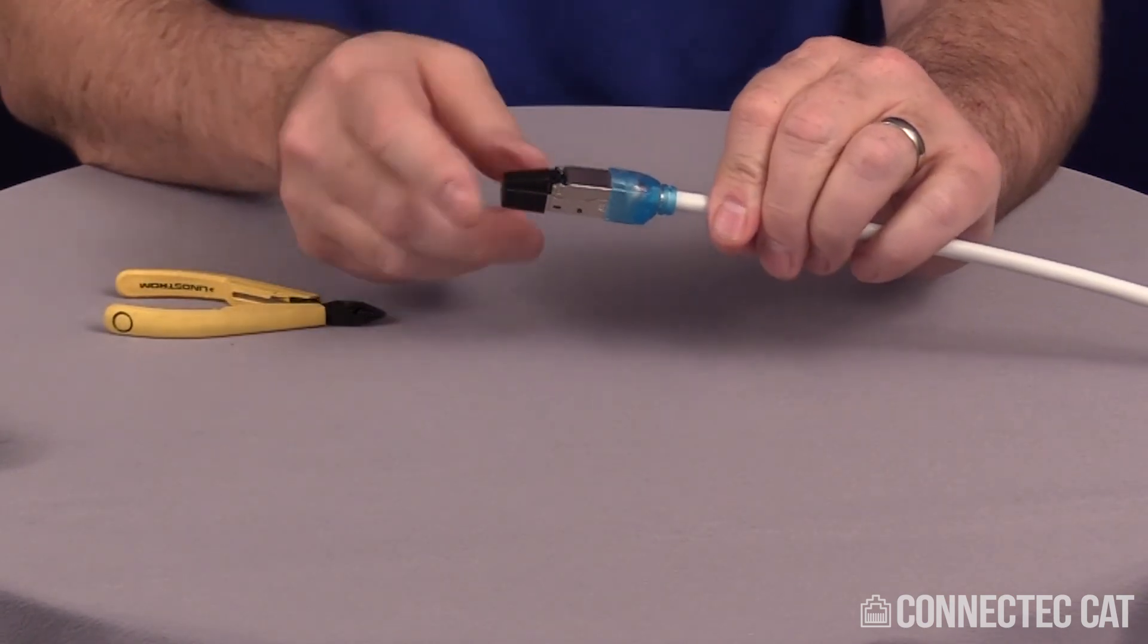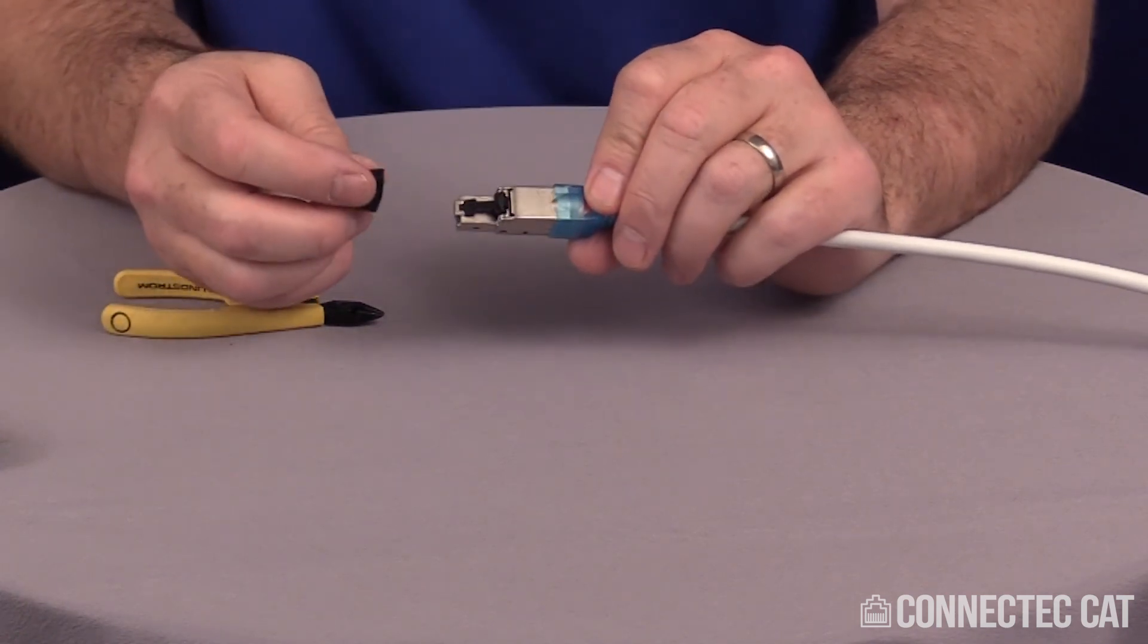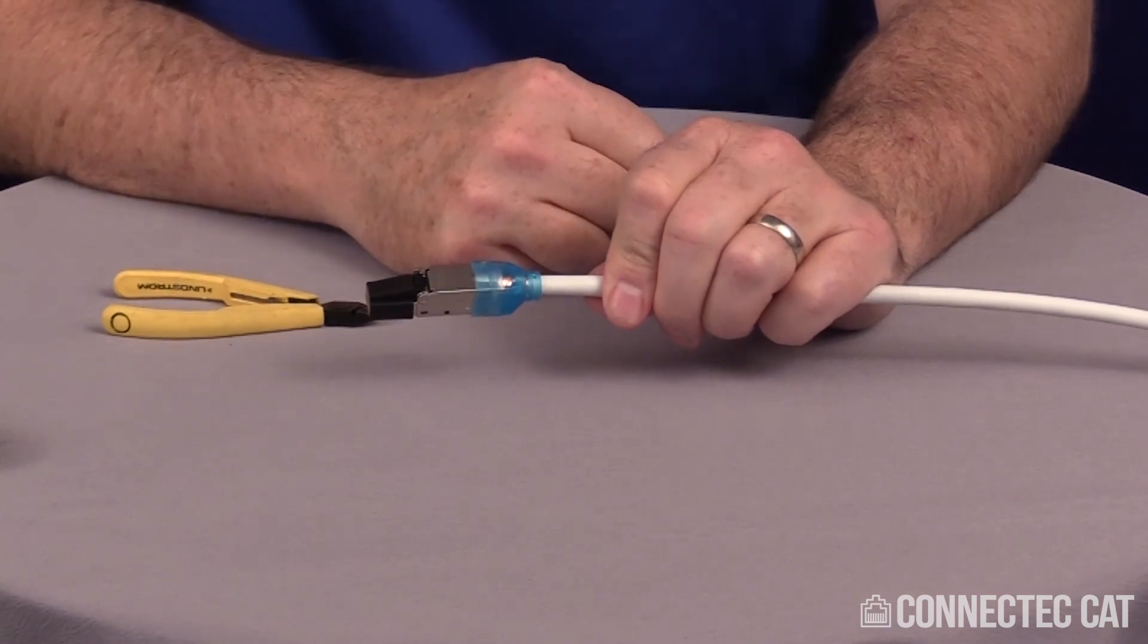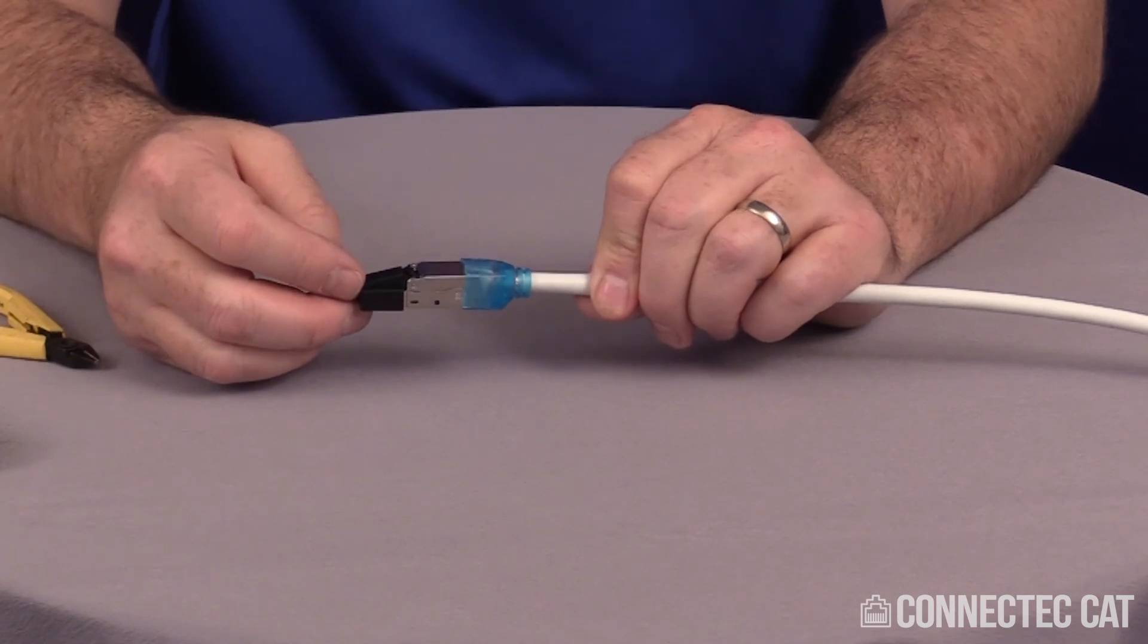This cap on the front here is just to protect your RJ45. You can take it off before you terminate it. This connector is re-terminable. You can actually take it back apart and re-terminate it. If you kept the label, you'd be able to know the color code, but that's very easy to do as far as re-termination.